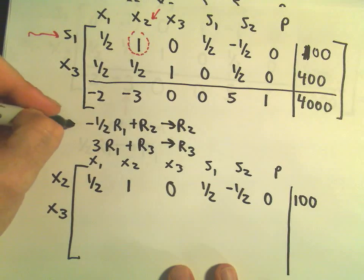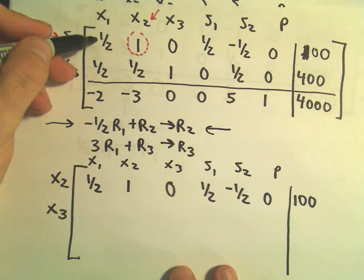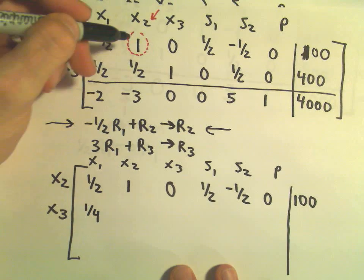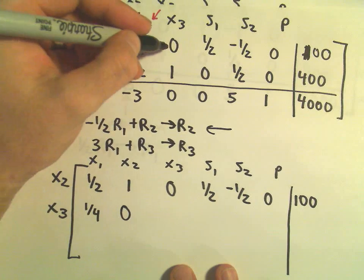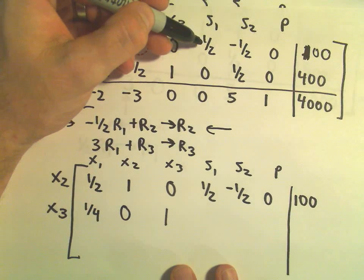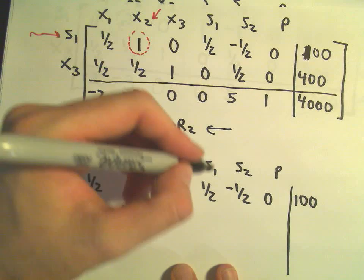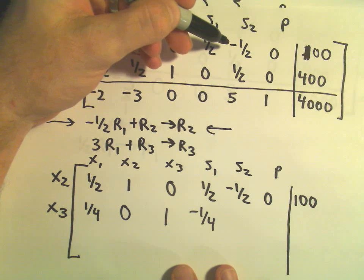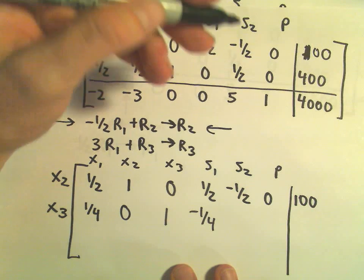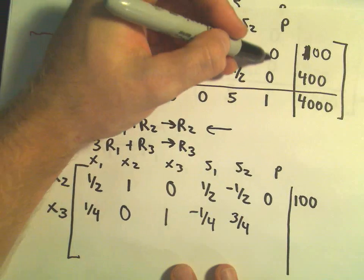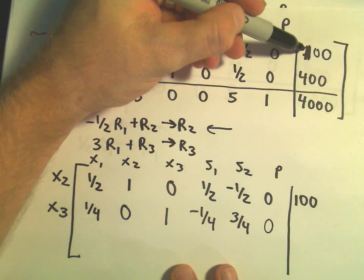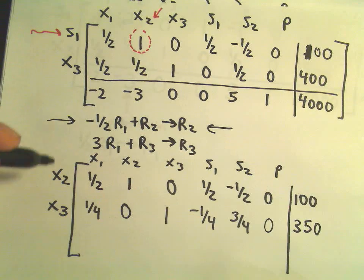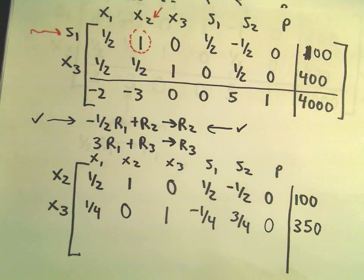For the row 2 operation, we take negative one-half times one-half which is negative one-fourth, plus one-half is positive one-fourth. We'll get negative one-half plus one-half which is 0. We'll get 0 plus 1 which is 1. Negative one-fourth plus 0 is negative one-fourth. Negative one-half times negative one-half is positive one-fourth, plus one-half will be three-fourths. We get 0, and negative one-half times 100 is negative 50, plus 400 is 350.